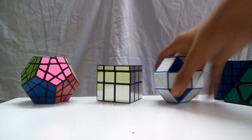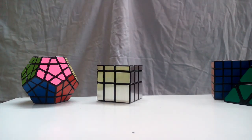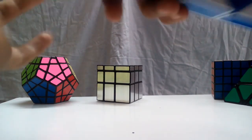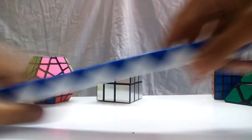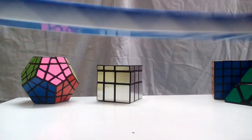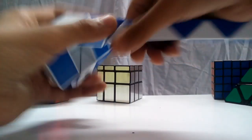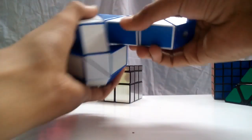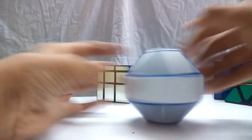Next up we have the Rubik's Snake. When it's scrambled it looks like this, all 24 triangles together. And when it's solved it looks like this, like a ball.